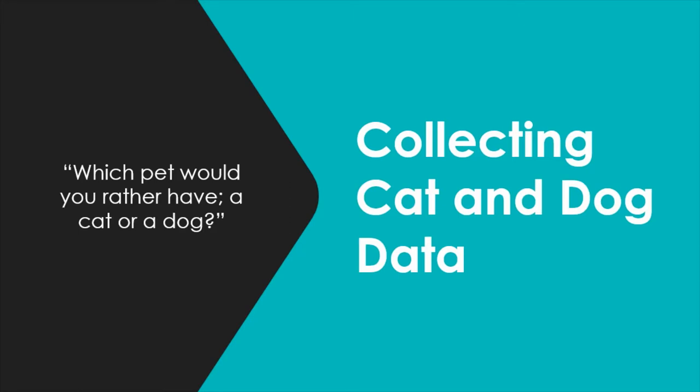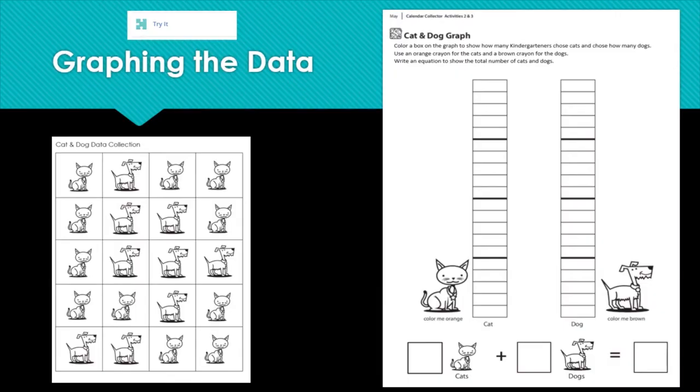So we've been collecting cat and dog data. Which pet would you rather have? Would you rather have a cat or a dog? I love my cat and my dog. I don't know if I could decide which one I would want. We've been collecting data. You'll find this information on the puzzle piece and try it in Schoology. We're going to do some of this together and some you're going to do on your own.